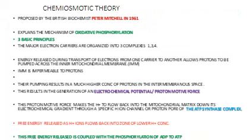The chemiosmotic theory was proposed by the British biochemist Peter Mitchell in 1961. It basically explains the mechanism of oxidative phosphorylation. There are three basic principles. The first is that the major electron carriers — complexes 1, 3, and 4 — are organized along the inner mitochondrial membrane.